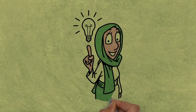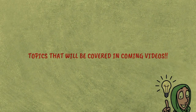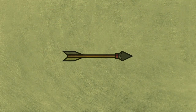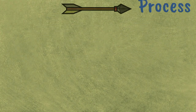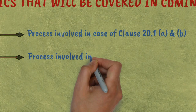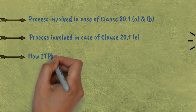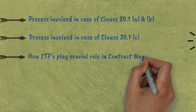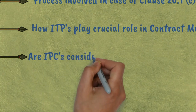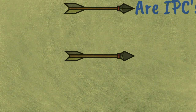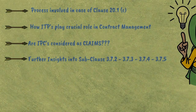Thank you for watching the video until now. For the coming videos, these are the topics we will cover: the process involved in the case of Clause 20.1 A and B; the process involved in the case of Clause 20.1 C; how IDPs play a crucial role in contract management; whether IPCs are considered as claims; and further insights into the sub-clauses of 3.7.